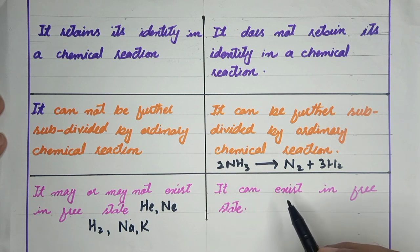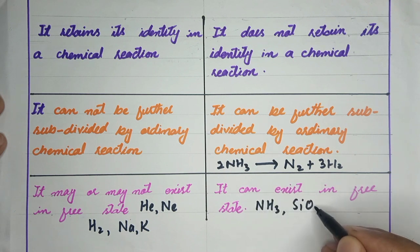Atoms and groups of atoms can exist in free state. Ammonia can exist in free state. Thank you and Allah Hafiz.